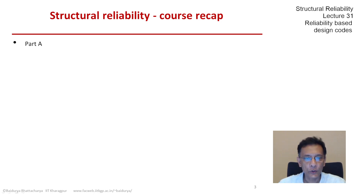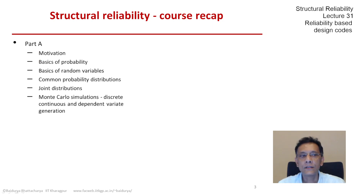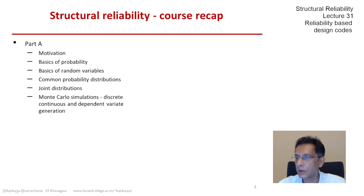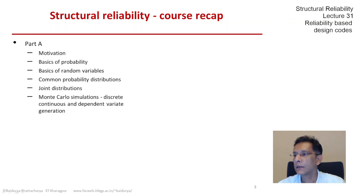In Part A of this course, we started with the motivation behind why this course should be useful, looked at the basics of probability theory, reviewed the basics of random variables and distributions, discussed quite a few discrete and continuous random variables that appear commonly in structural reliability. We looked at joint distributions and ended Part A with Monte Carlo simulations, particularly how to generate discrete, continuous and dependent random variables.